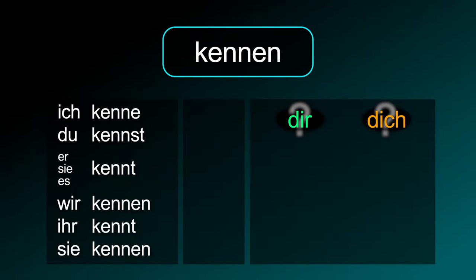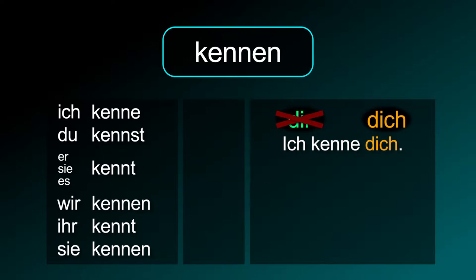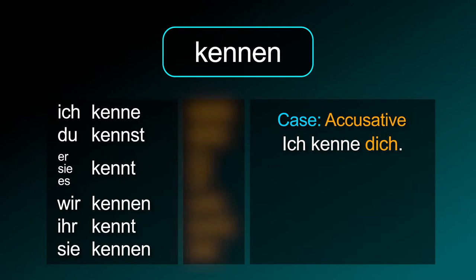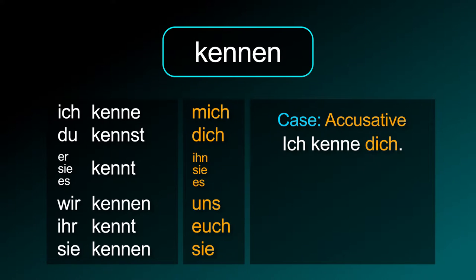This verb needs the accusative case. Therefore, the correct way to say 'I know you' is 'Ich kenne dich'. In German, there are two words with the meaning 'to know'. The verb 'kennen' has to be used when you know somebody or a particular thing or place that you are familiar with. If you want to say that you have knowledge about something, then you have to use the verb 'wissen'.